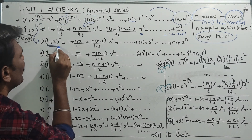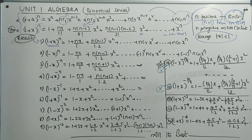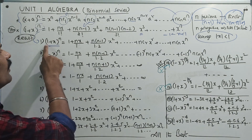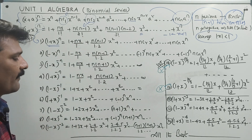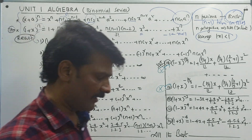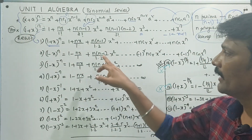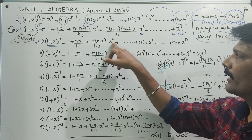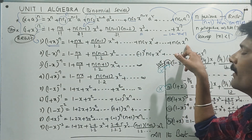1 plus x whole power n — we call it y — is equal to 1 plus nx by 1 factorial plus n into n minus 1 by 2 factorial into x squared, plus etc., plus ncn x power n.